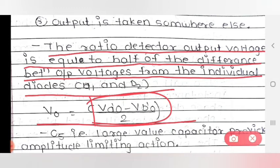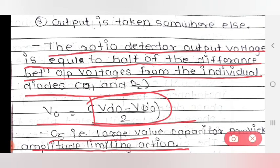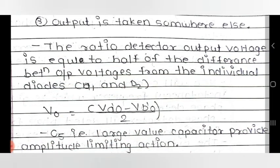C5, the large value capacitor, provides amplitude limiting action. This means it will limit the amplitude variations, providing an amplitude limiting process in the ratio detector circuit.